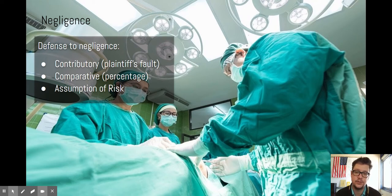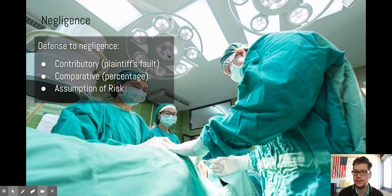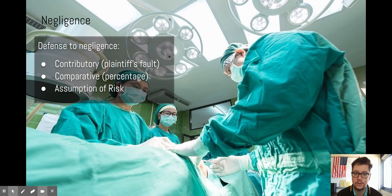The best defense is assumption of risk. The classic example: when you use sharp kitchen knives to cut fruit and accidentally cut your finger, the knife company will say everyone knows kitchen knives are supposed to be sharp. You assumed the risk, and therefore the plaintiff cannot get any damages from the defendant. Assumption of risk is a great defense to negligence.